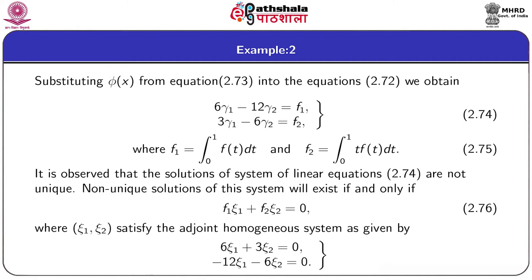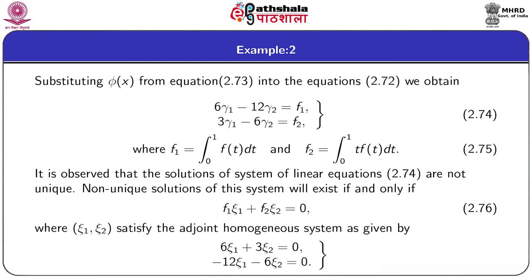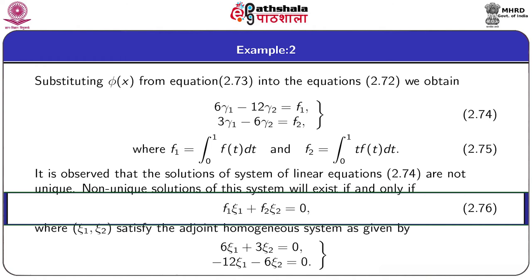The constants f1 and f2 on the right-hand side of equation 2.74 are given by equation 2.75. F1 and f2 are related to the forcing function f(t). Closely observing equation 2.74, we can see that the solution of the system of linear equations 2.74 is not unique. The non-unique solution of this system will exist if and only if the relation given by 2.76 holds.